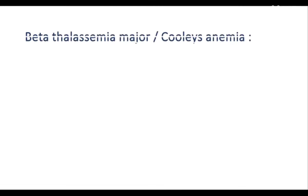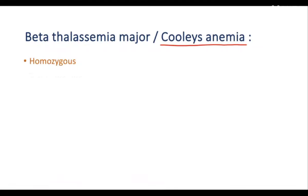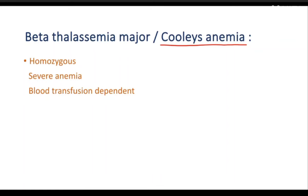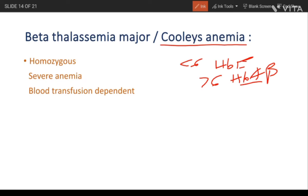Beta thalassemia major is also called Cooley's anemia. It is homozygous. Severe anemia is seen, and patients are blood transfusion dependent. For infants less than six months, there is no problem as they have fetal hemoglobin. When they become more than six months old, fetal hemoglobin converts to adult hemoglobin, but since there is no beta chain production, alpha globin tetramers form, which destroy the RBCs — requiring blood transfusions.